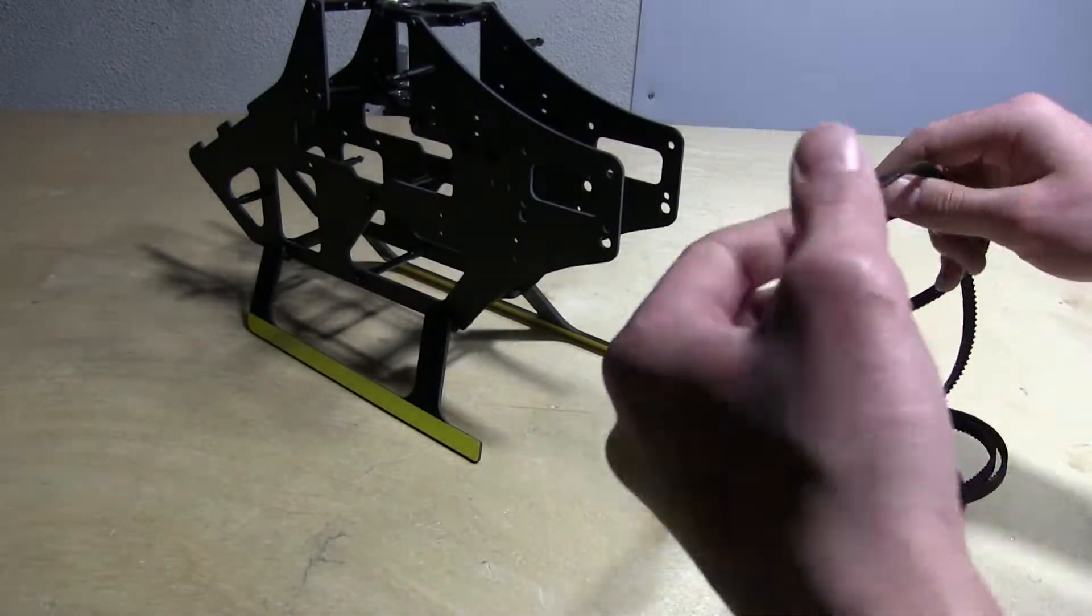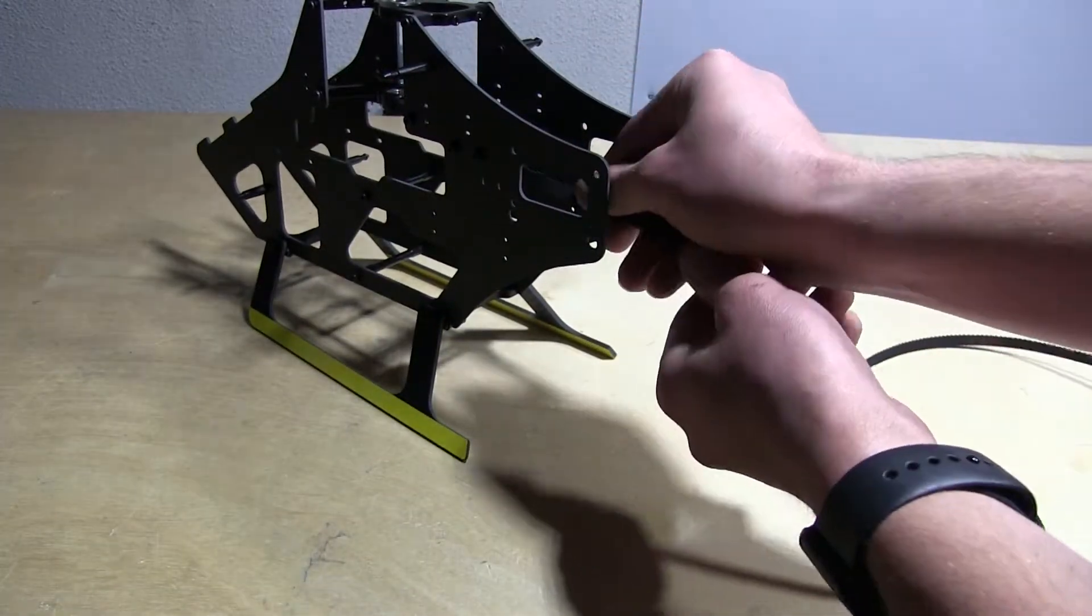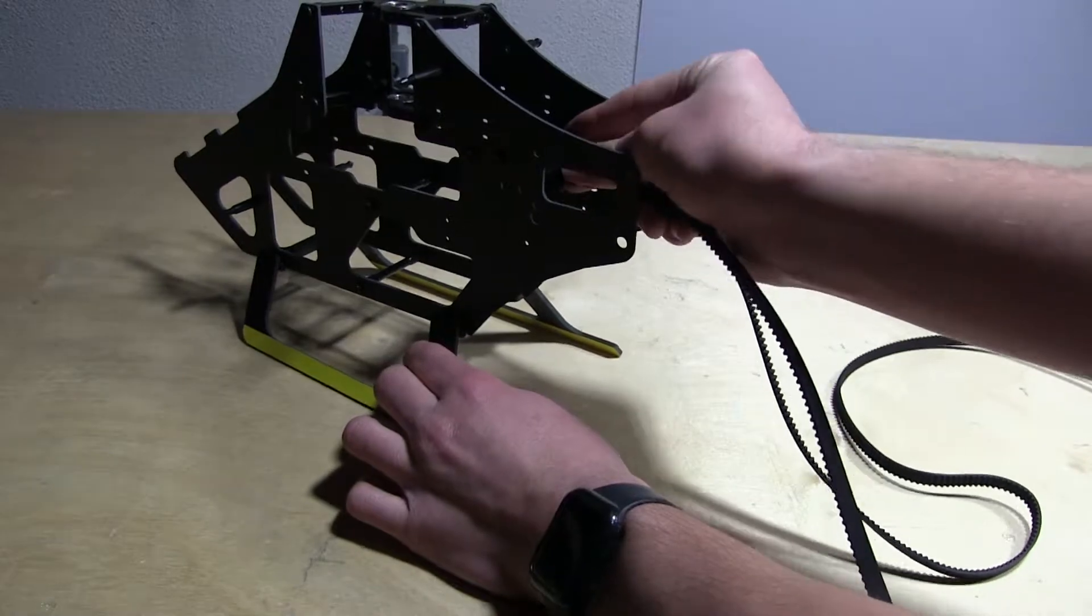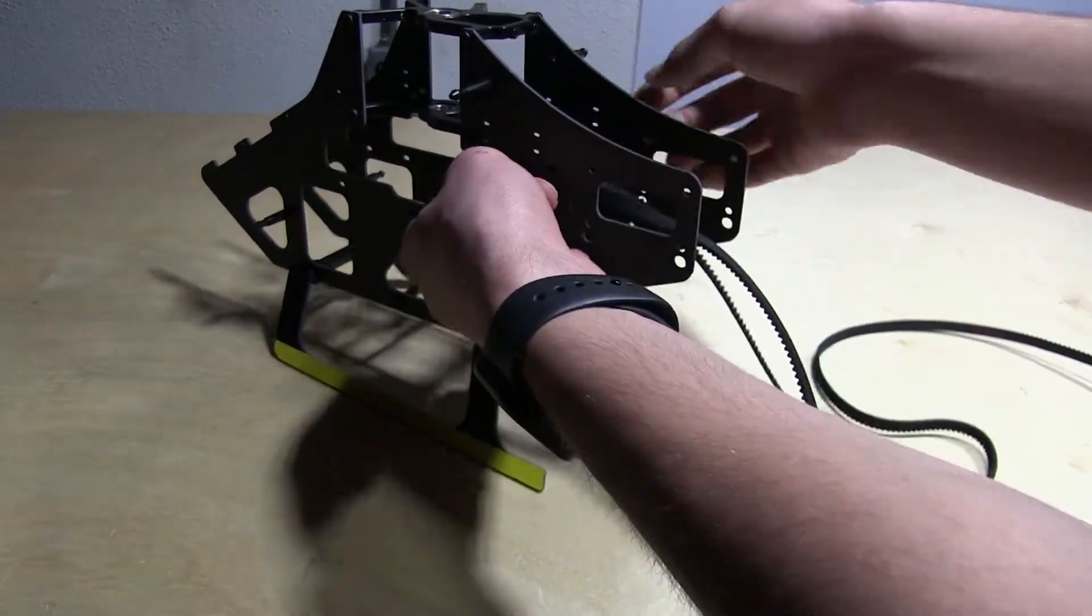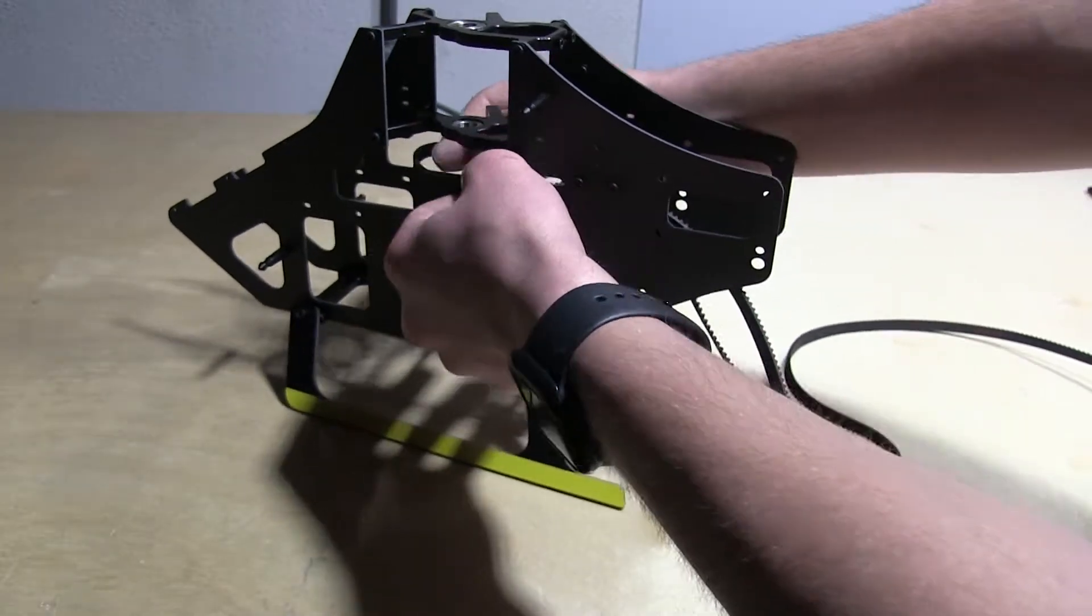Now if you have your tail belt, now is a good time to go ahead and just route the belt itself through these guides up here and just make sure there's a good amount inside the frame like so.